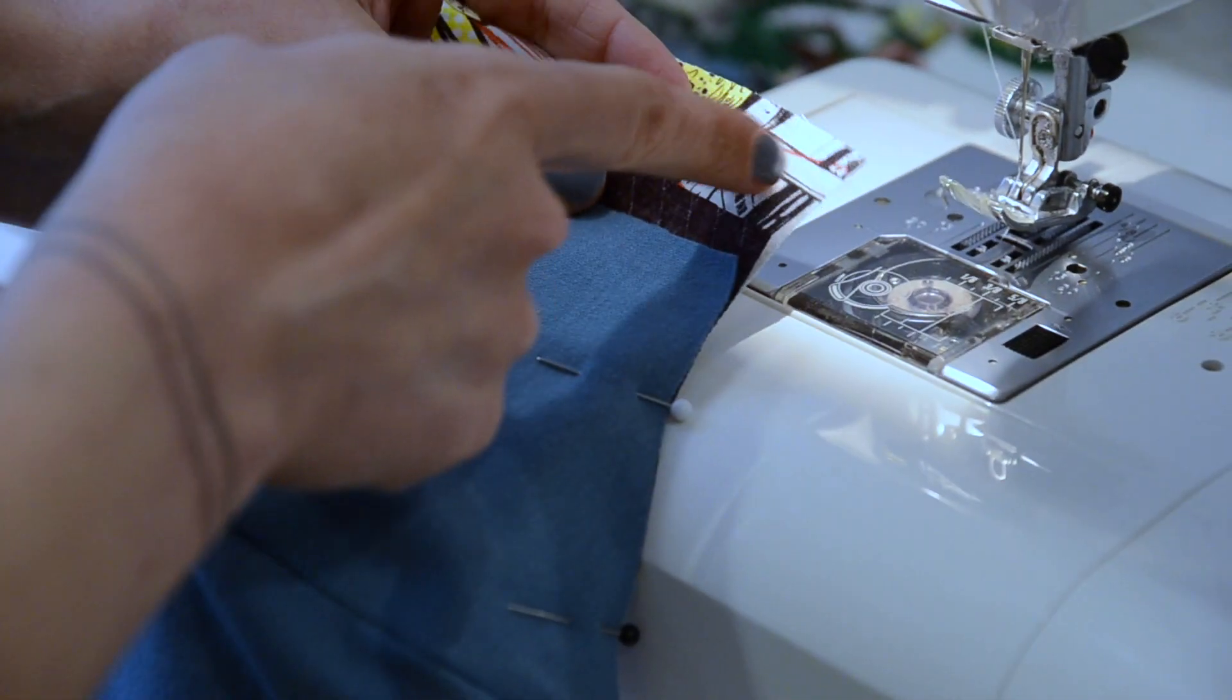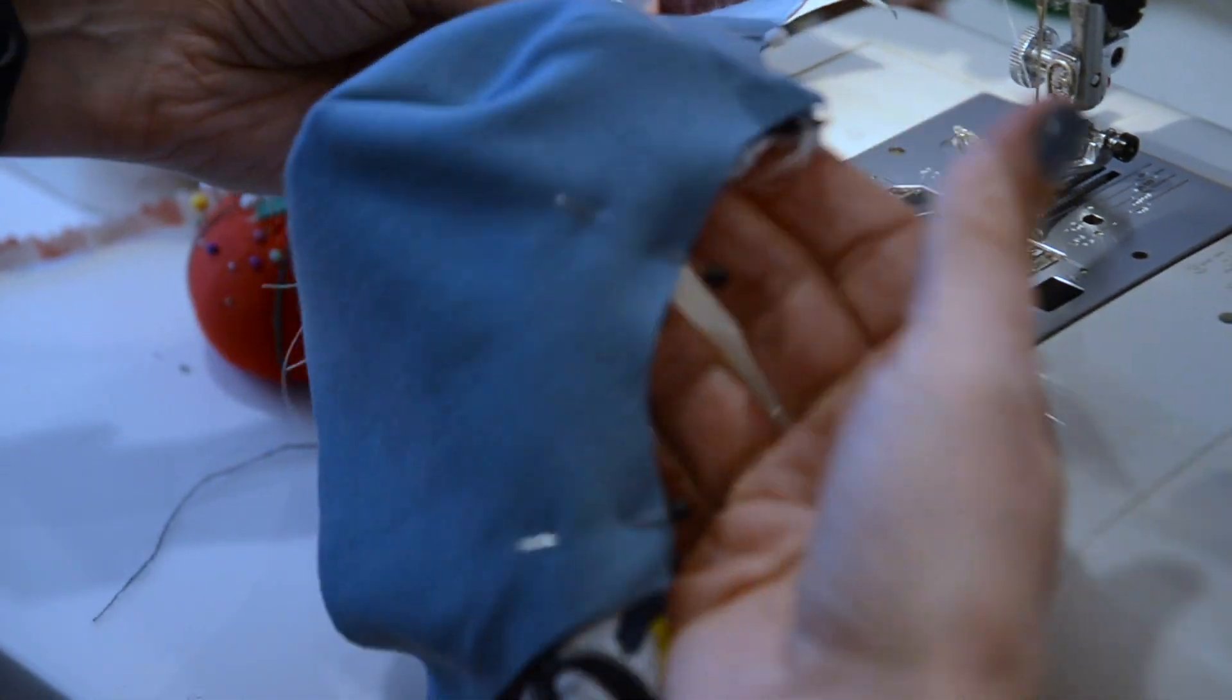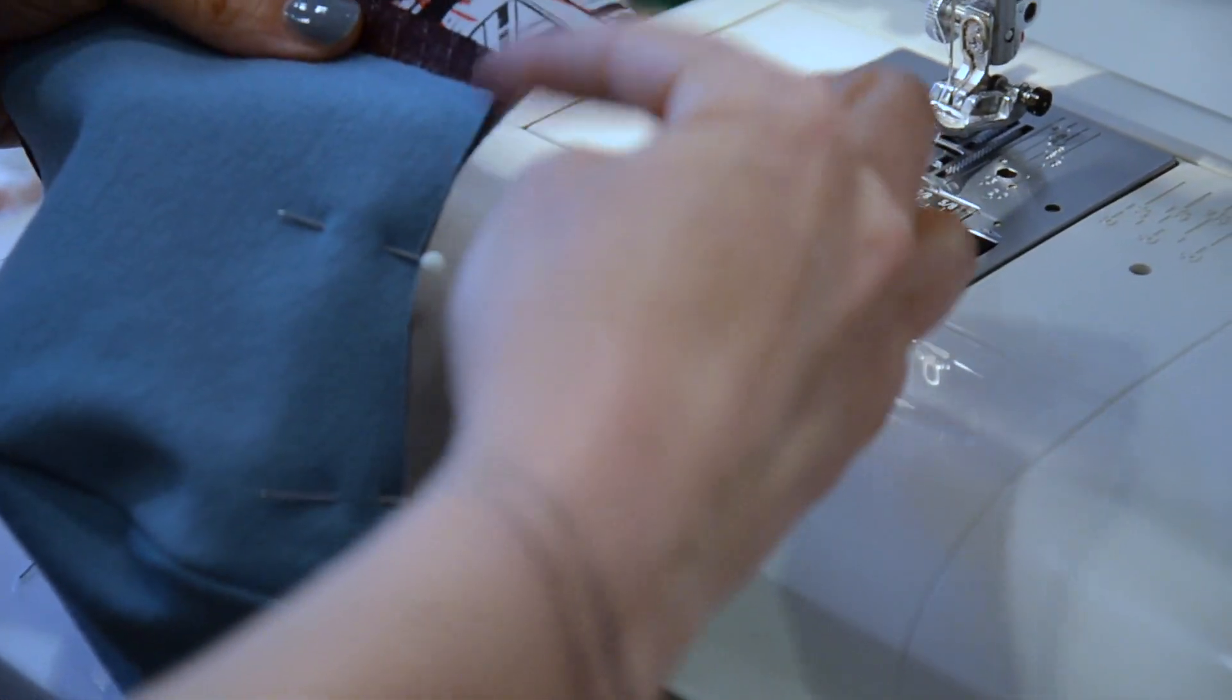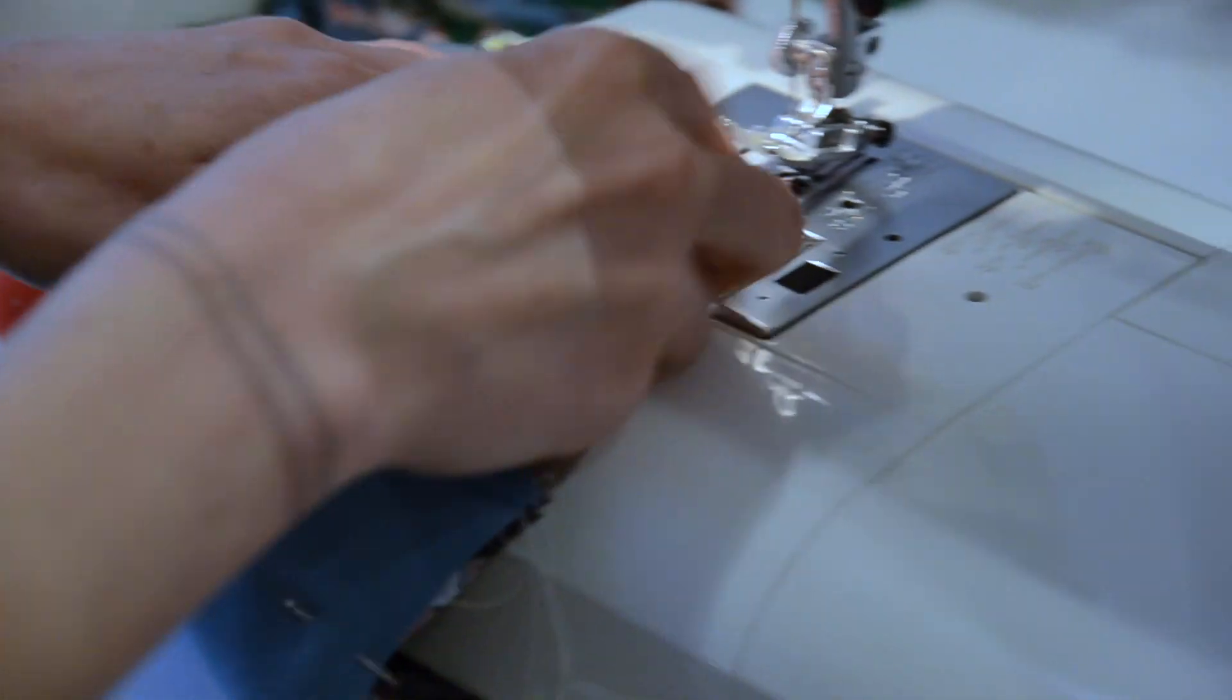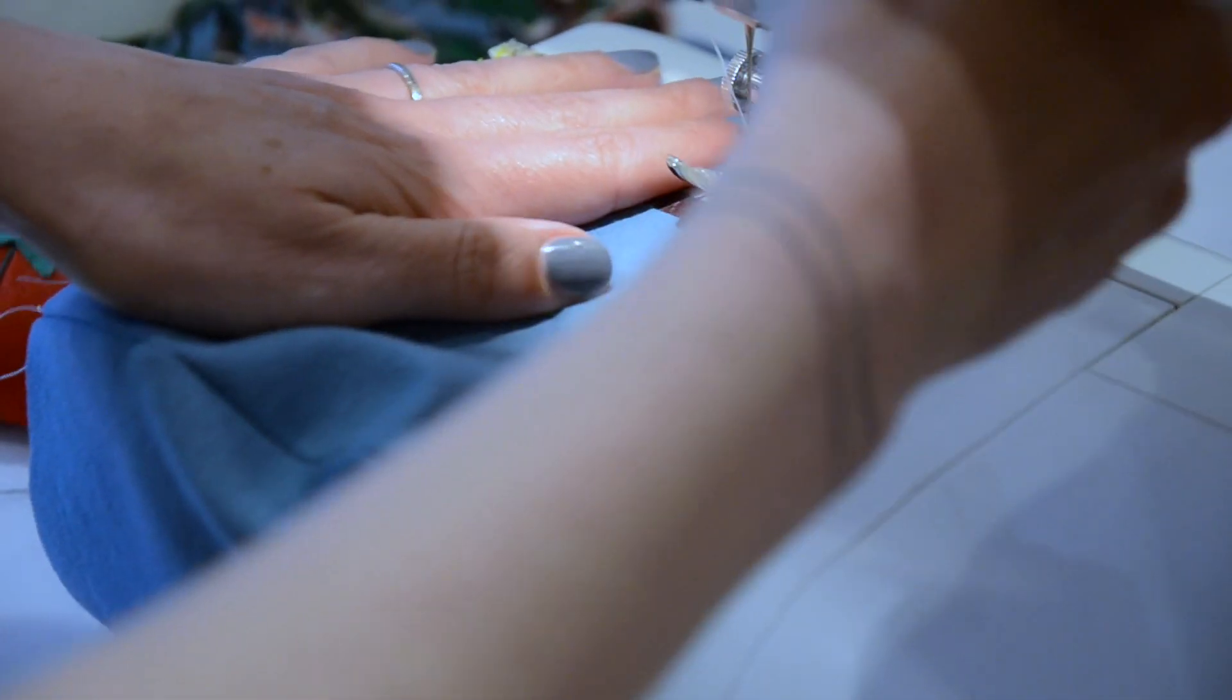Now we're going to sew one seam along the top edge of the mask. You don't need to worry about reversing at the front ends because this is all going to get folded over.